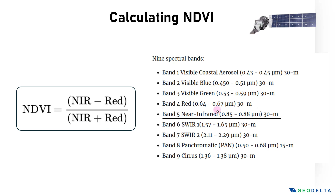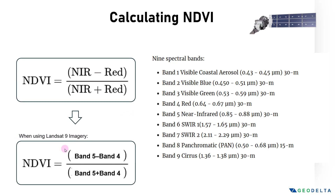Now, if you're talking about another mission like Landsat 7, the ordering of the bands might be different. But all you need to remember is to find the band capturing the near infrared wavelength range and the band corresponding to the red color in the visible spectrum. For Landsat 9 specifically, NDVI can be calculated as band five minus band four, divided by band five plus band four — because band five is the near infrared band and band four is the red band.